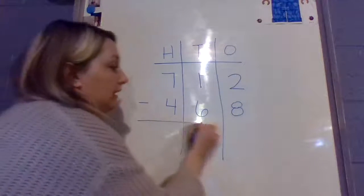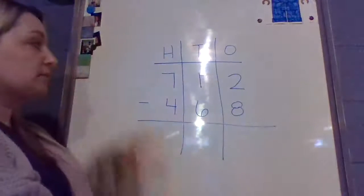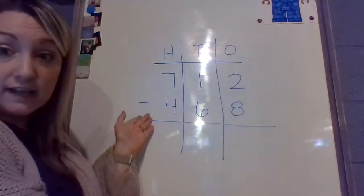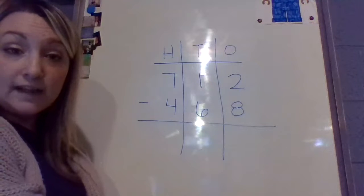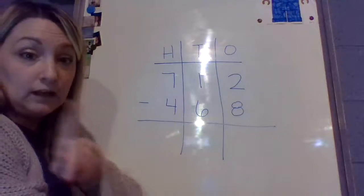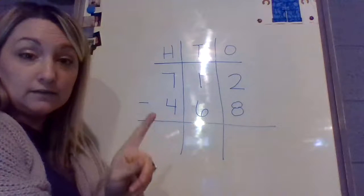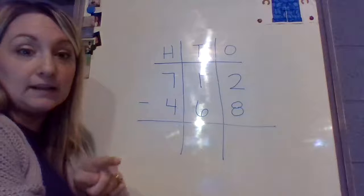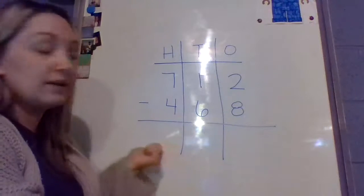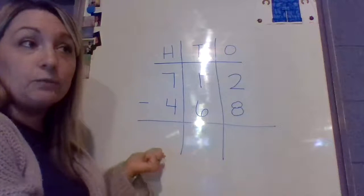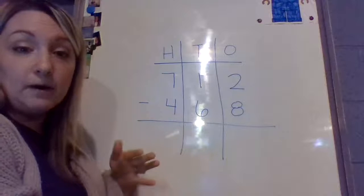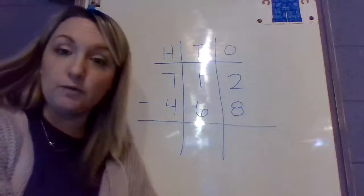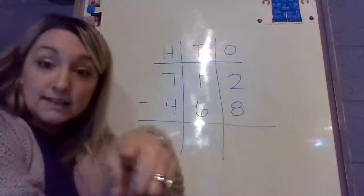Go ahead and write in 712 minus 468. I'm going to draw my line. So I'm subtracting 712 minus 468. If you need more time to write that in, hit the pause button, try to solve it, and then come back and check to see if you get it right with me. So actually, everybody hit the pause button. I want you to try to solve it on your paper, and then once you've solved it, unpause it and see if you got the answer right.